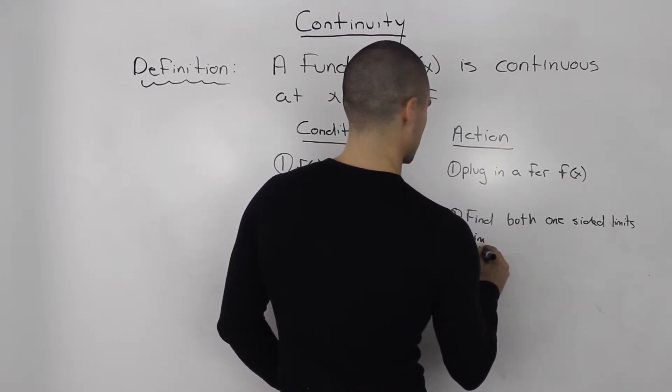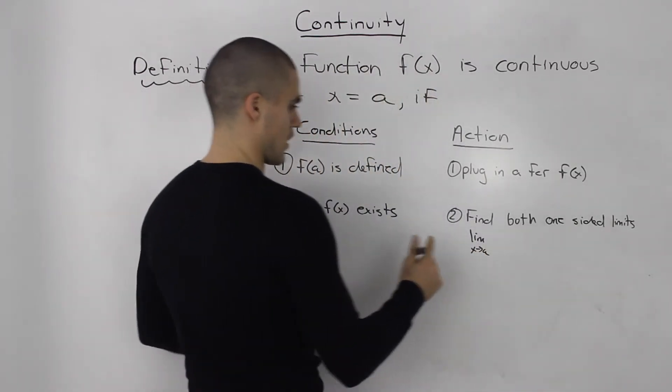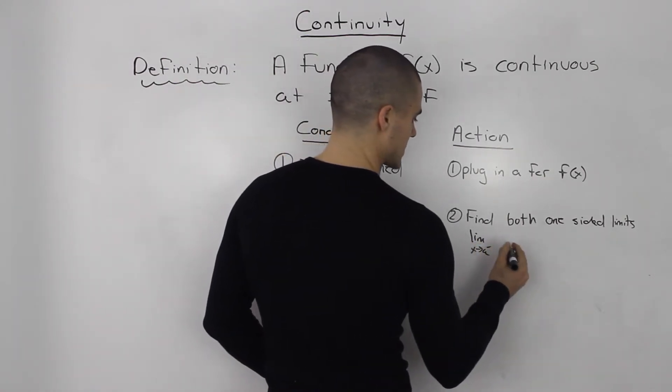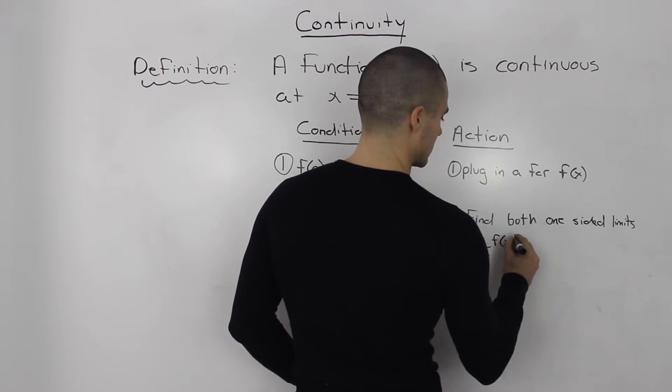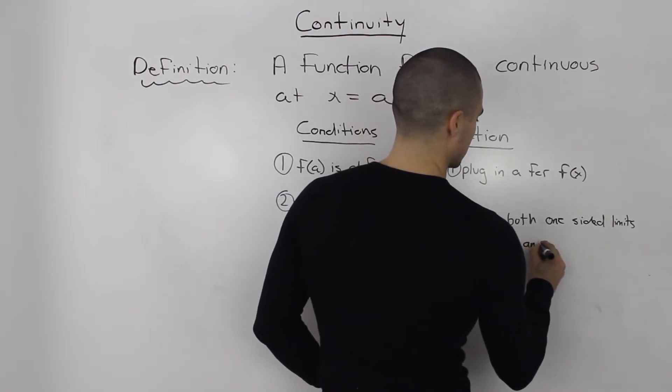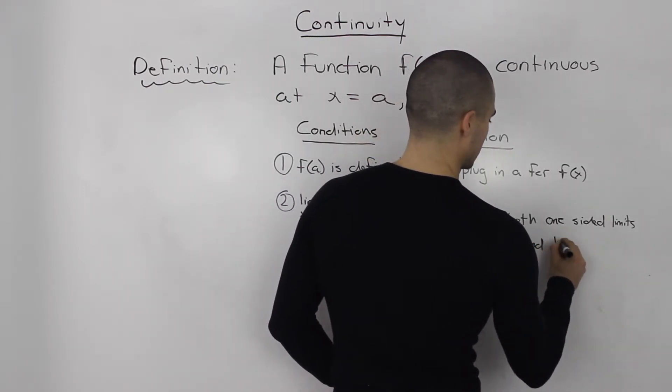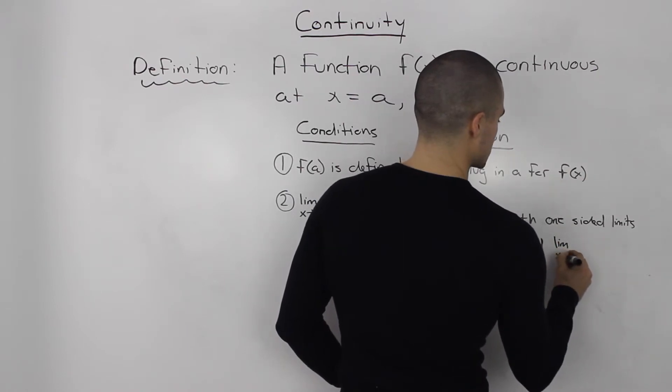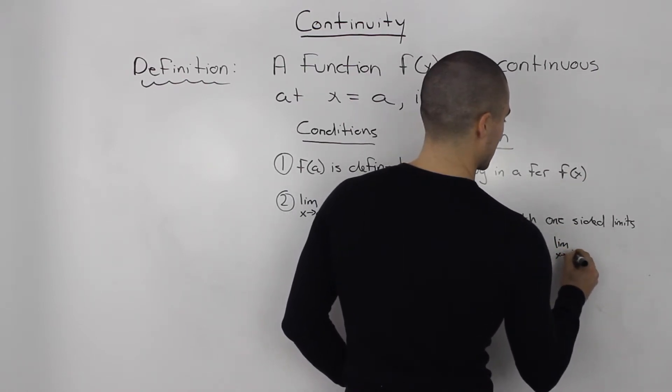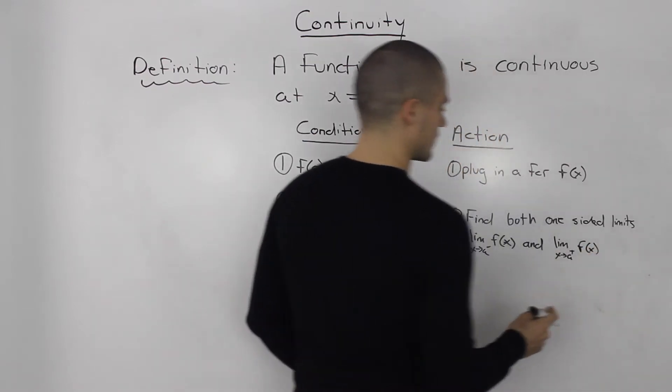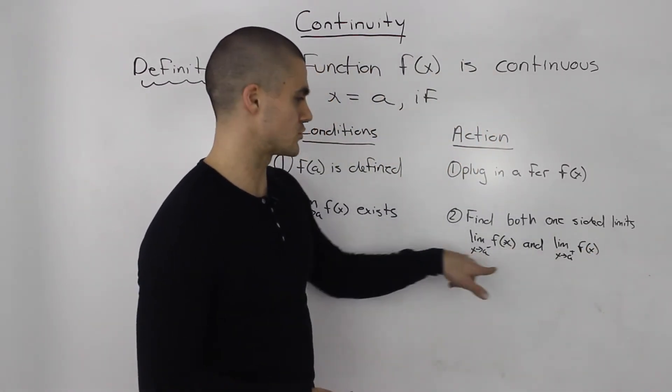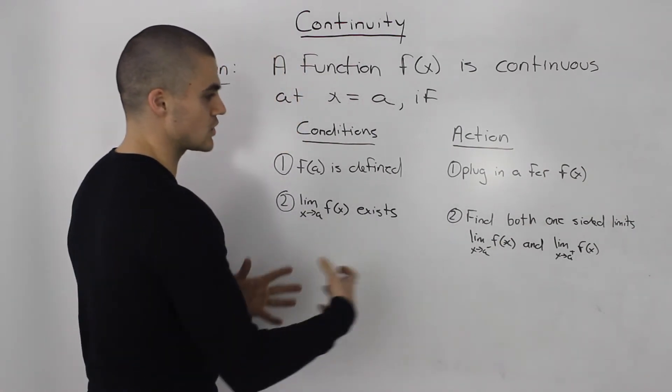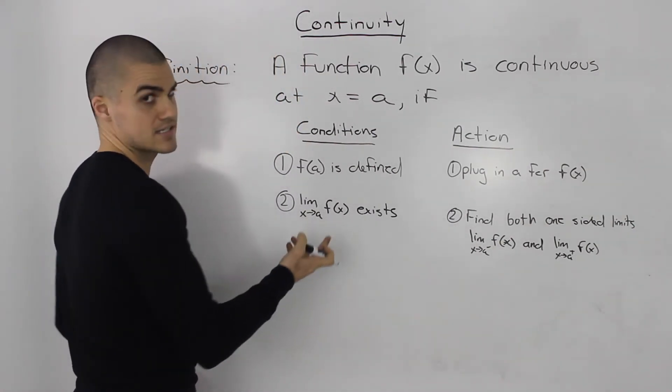The limit as x approaches a from the left side of f(x), and the limit as x approaches a from the positive side. If those two one-sided limits exist and they equal, then you know that this limit exists.